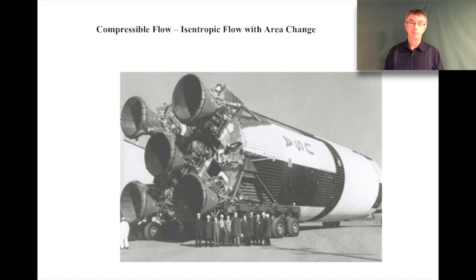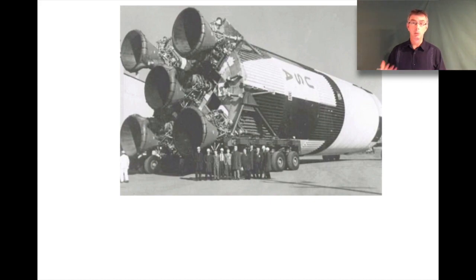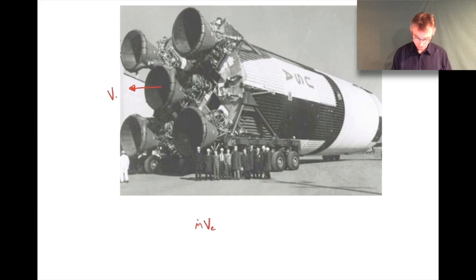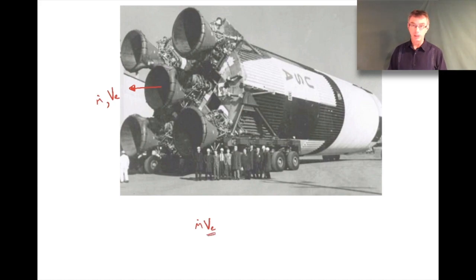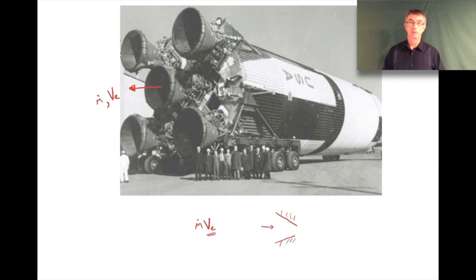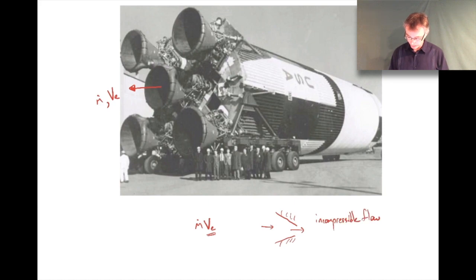From your understanding of incompressible flow dynamics, this doesn't really make a lot of sense. From our linear momentum equation analysis, we know that to get as much thrust out of the rocket as possible, you'd want the mass flow rate times the velocity of the exhaust to be large. For an incompressible flow, from conservation of mass we get density times velocity times area equals a constant.